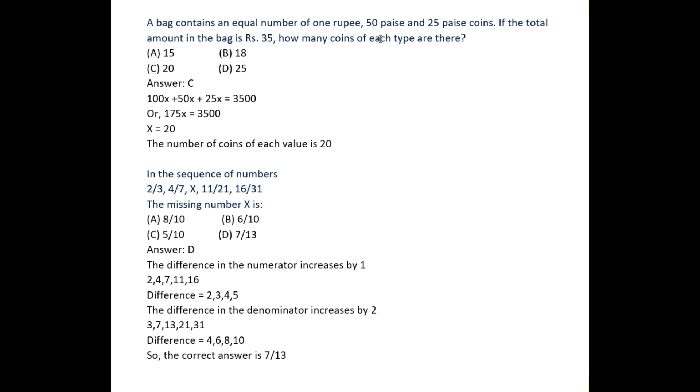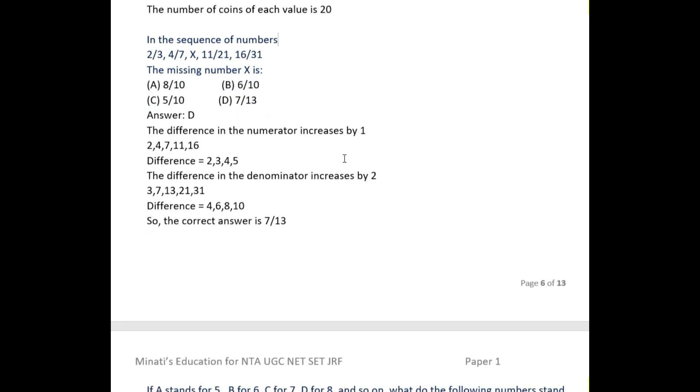Let it be x. If you convert one rupee to paisa, you will get 100x plus 50x plus 25x equals 35 rupees. Convert 35 rupees to 3500 paisa. Take the value: x equals 20. So the number of coins of each value is 20. This is the way these types of sums you can do.